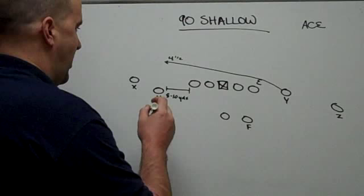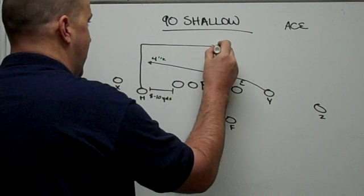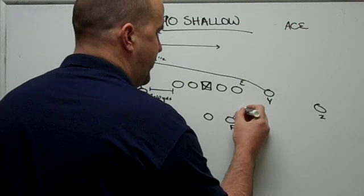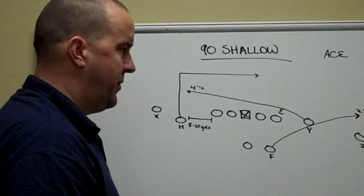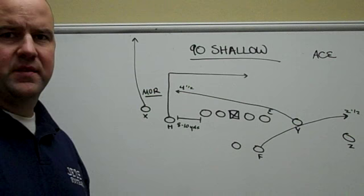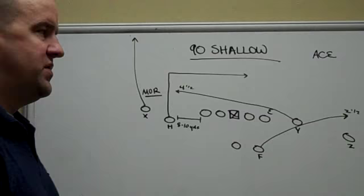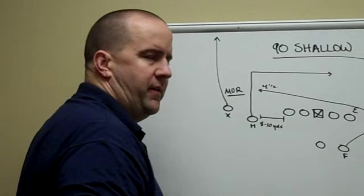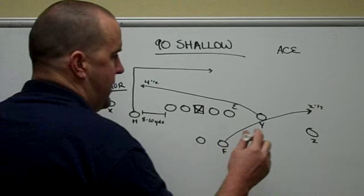The H is going to run a ten yard dig — he's going to come to ten yards and come straight across. The F is going to run a shoot route to about two and a half yards past the line of scrimmage. On the outside, X is going to run a go. This is a mandatory outside release — abbreviated MOR. The reason we want a mandatory outside release by the X receiver is so that if there's a corner or any type of man coverage, that defender will go with X and clear this area. To the other side, Z is going to run a post.